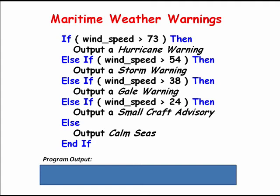Let's assume we have a wind speed of 40 miles per hour. Using this cascading if logic, a wind speed of 40 miles per hour would translate into a gale warning. Our algorithm would execute as follows. First, the condition wind speed greater than 73 would be checked. Since 40 is not greater than 73, that condition would be false and execution would cascade down to the next condition. 40 is not greater than 54, so once again execution would cascade to the next condition.